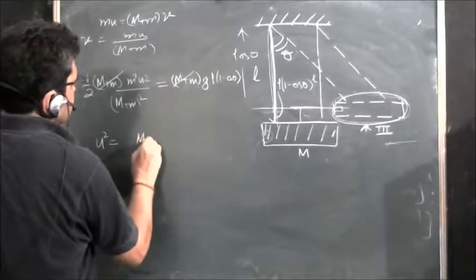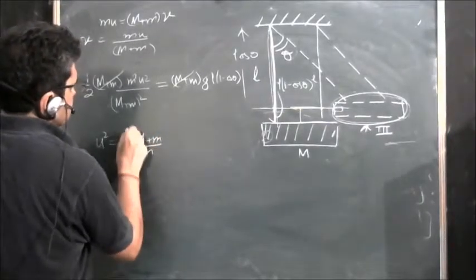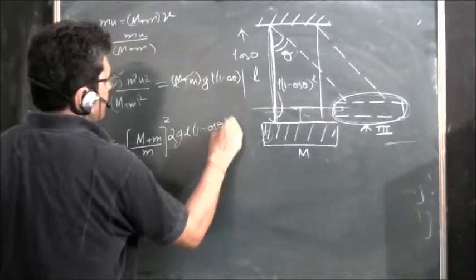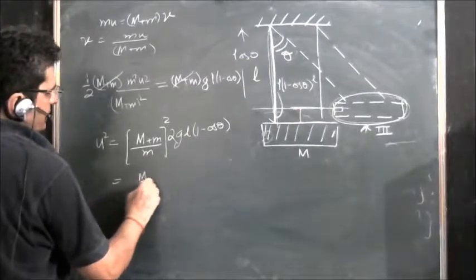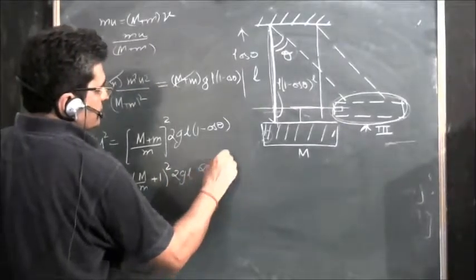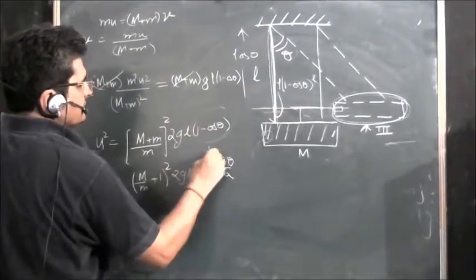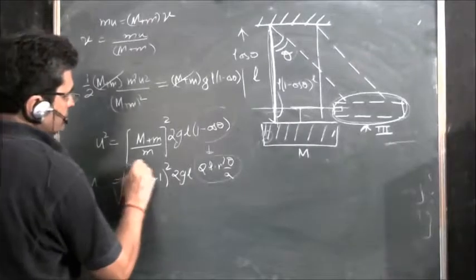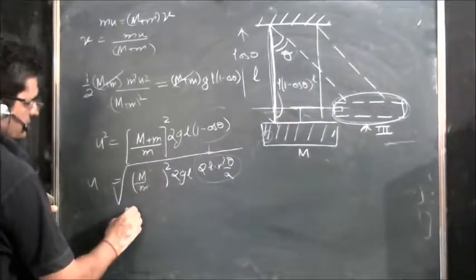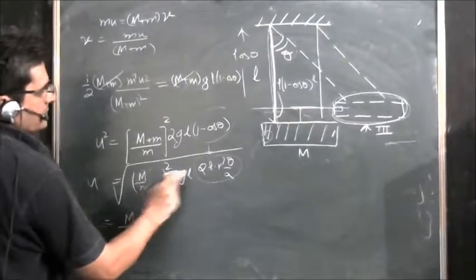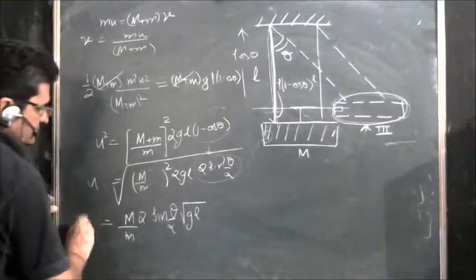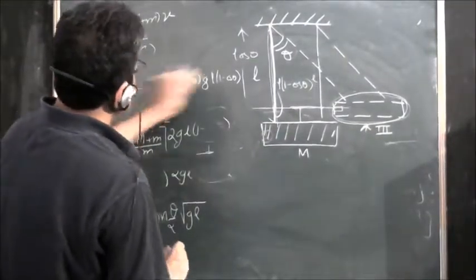So U² = ((M + m)/m)² × 2gL(1 − cosθ). Using the trigonometric identity, 1 − cosθ = 2sin²(θ/2). Since M is very large compared to m, M+m ≈ M. The final answer for bullet velocity is U = (M/m) × 2sin(θ/2) × √(gL).